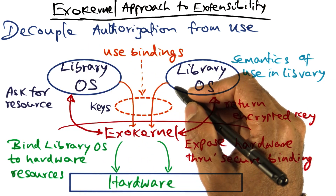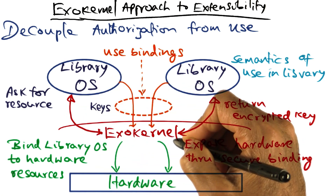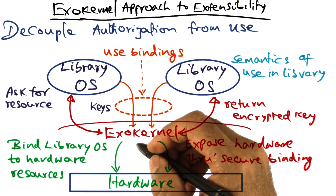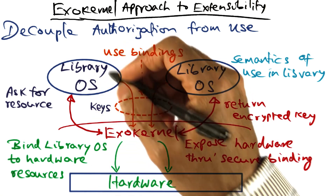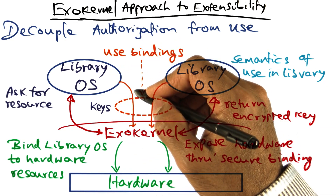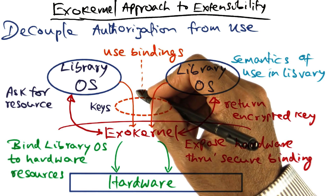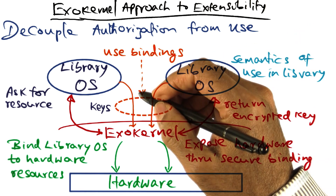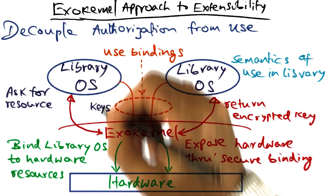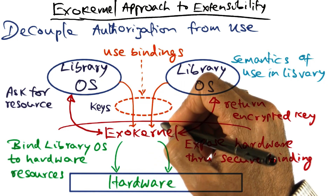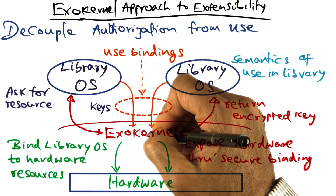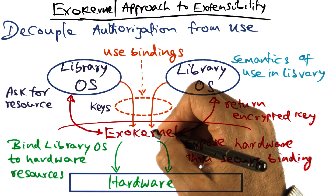Once a library operating system has asked for a resource and ExoKernel has created the binding for that resource to the requesting library operating system, the operating system is now ready to use the resource. What the library operating system will do is present the encrypted key that it received, authenticating that use of the resource for this library to the ExoKernel. ExoKernel will then be able to validate whether the key presented to it is the key that was issued to this particular library operating system.